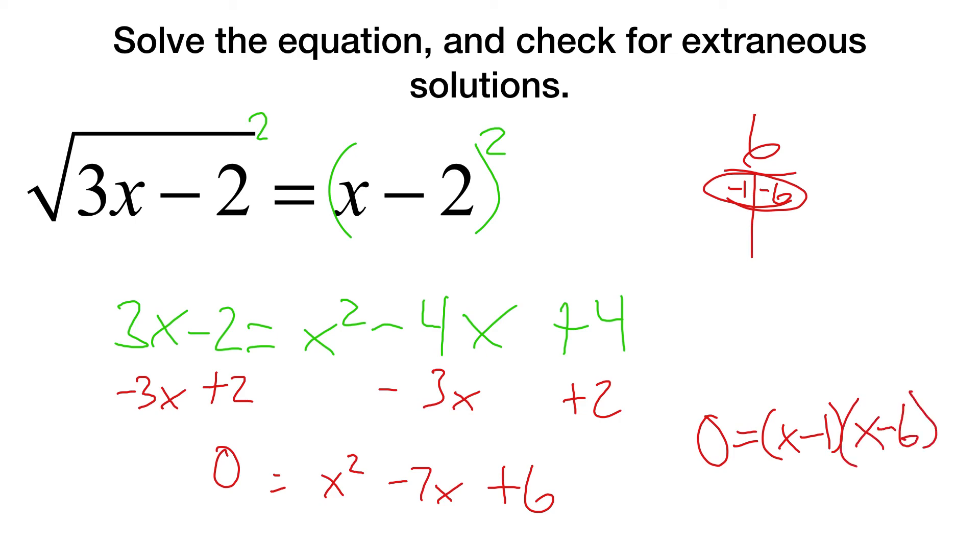Meaning our two possible answers are x equals 1 or 6. Let's plug in our values to see which one is correct. So square root of 3 minus 2 equals 1 minus 2. So let's see. Square root of 1 is negative 1. That means 1 is negative 1. Nope.